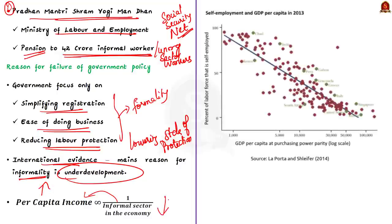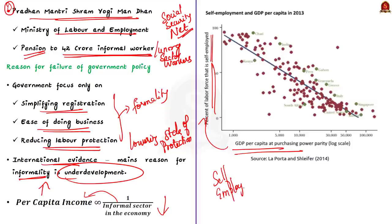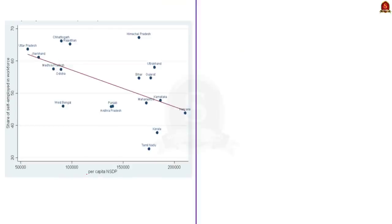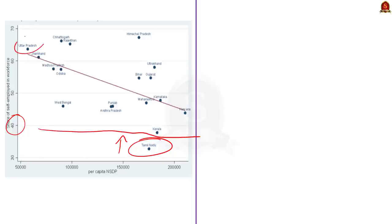Look at this graph. It shows the relationship between GDP per capita and percentage of the labor force that is self-employed, which is considered a measure of the informal workforce. For a country like Singapore, whose GDP per capita is high, the percentage of the labor force in the informal sector is low. The reverse is applicable in a country like Chad. Now look at the relationship between GDP and informalization among Indian states. For a state like Tamil Nadu with higher net state domestic product per capita, the share of the informal workforce is low, while for a state like UP, the inverse is applicable. According to the editorial, persistence of a high share of informal employment seems to reflect nothing but a lack of adequate growth or continuation of underdevelopment.